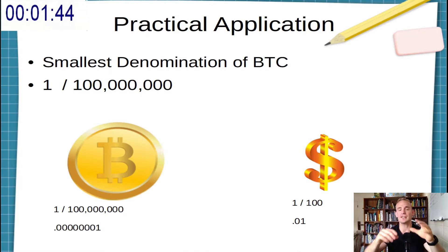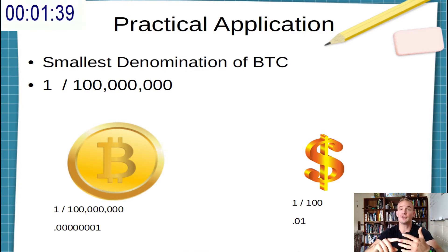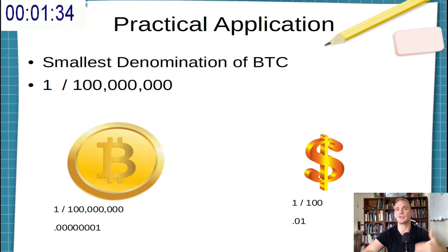A Satoshi is the smallest denomination of Bitcoin that can be transferred. It's defined as one divided by one hundred million, or one one-hundred-millionth of a Bitcoin.